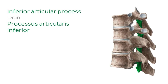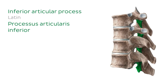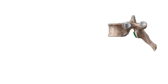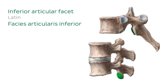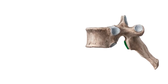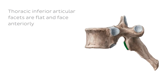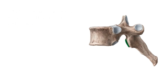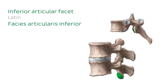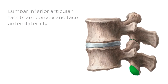Each vertebra possesses two inferior articular processes, which articulate with the superior articular processes of the vertebrae below via their inferior articular facets. The thoracic vertebra has flat inferior articular facets that face anteriorly, whereas the lumbar vertebra has convex inferior articular facets that face anterolaterally.